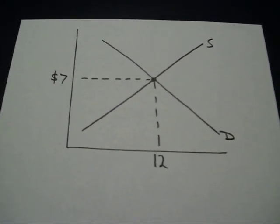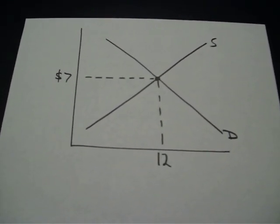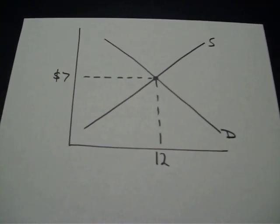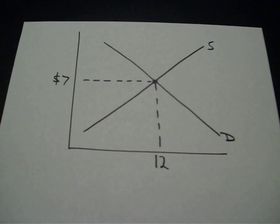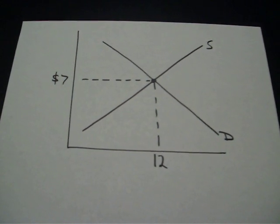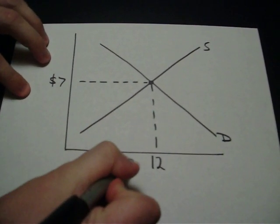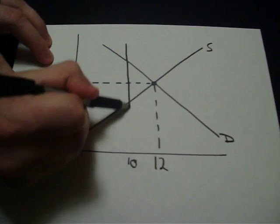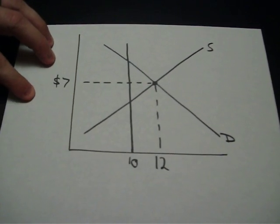Okay, so here's a quota. Supply and demand is determined that price is $7 and the amount that's bought and sold is 12 units. So let's say the government comes in and says there's going to be a quota, let's say at 10 units. So the government is saying, here's the quota.